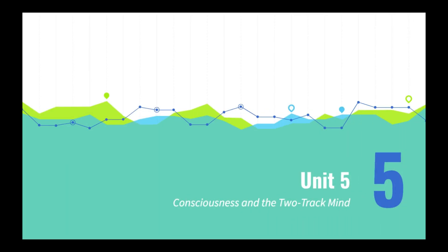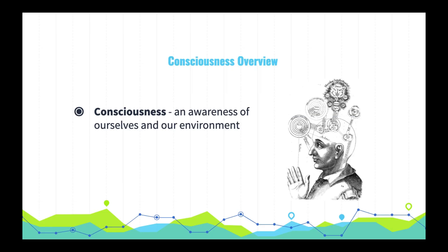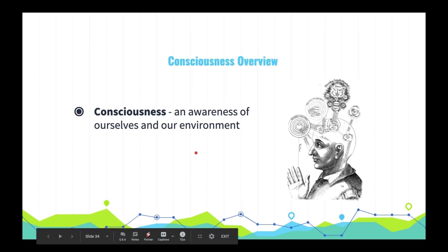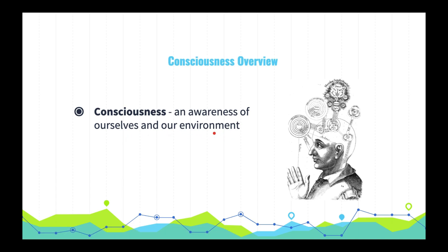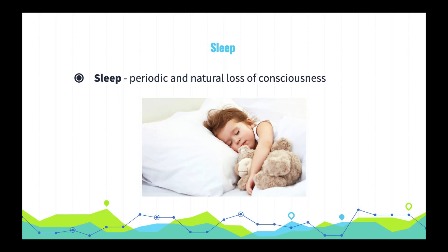Alright, Unit 5. Abe, start us off. So definitely know the definition of consciousness — that's an awareness of ourselves and our environment. There are various stages of consciousness that we enter and leave throughout a typical day, such as sleeping and then waking up. Let's start with sleep. Sleep is a periodic natural loss of consciousness.